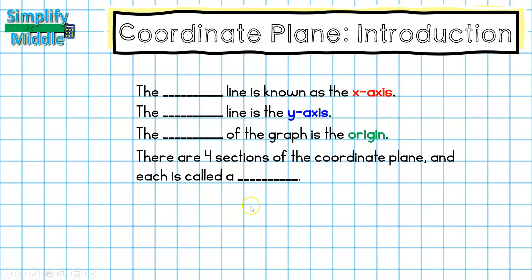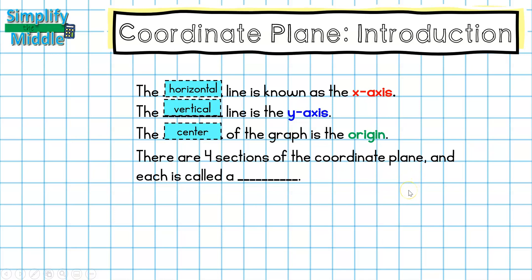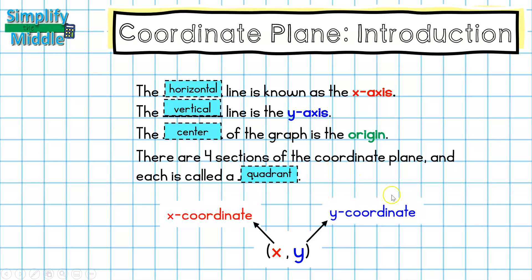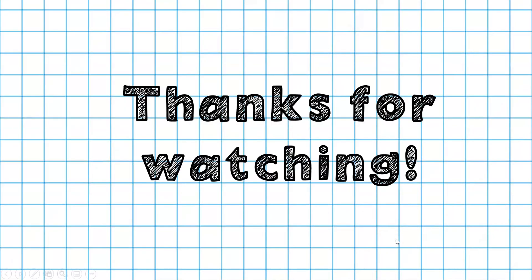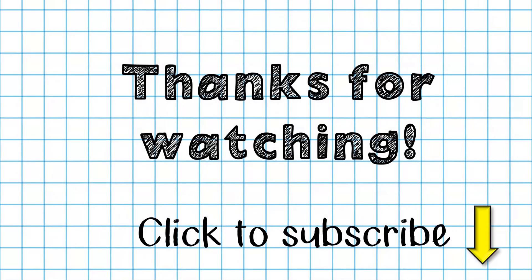Let's wrap up: the horizontal number line is known as the x-axis, and the vertical number line is the y-axis. The center of the graph is called the origin, and there are four sections of the coordinate plane — each is called a quadrant. We also learned what an ordered pair looks like and that it's made of an x-coordinate and a y-coordinate. Thanks so much for tuning in — feel free to subscribe so you never miss a new lesson!